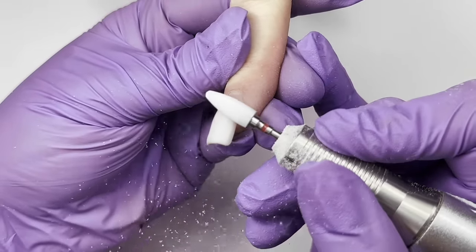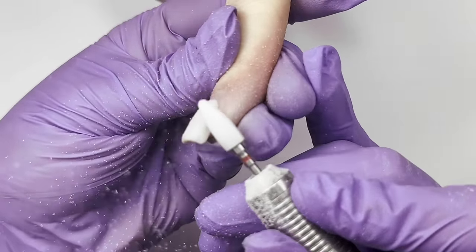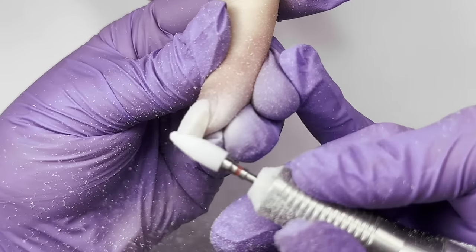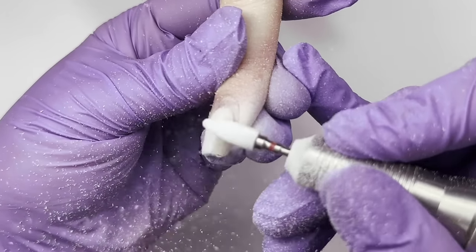Hello guys, this is Anastasia. As usual, we're going to start with product removal. I'm using ceramic bead. The speed is 25,000 rotations per minute.